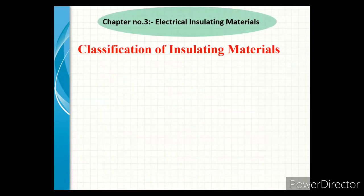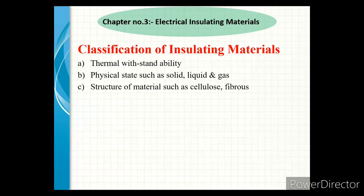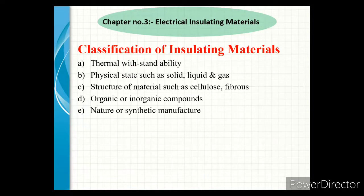Heat resistance: the insulating material should have more heat resistance, thereby making the apparatus capable of handling more power. Next, the classification of insulating material: first class is thermal withstand ability; second is physical state such as solid, liquid, and gaseous state; third class is structure of content such as cellulose fibrous; fourth is organic or inorganic compounds; and another class is natural or synthetic manufacture.